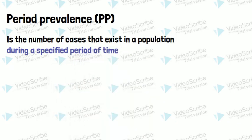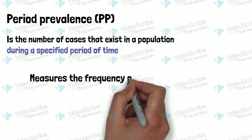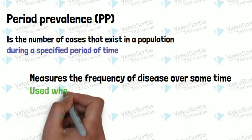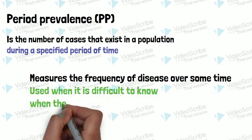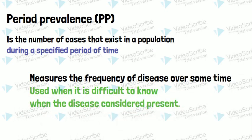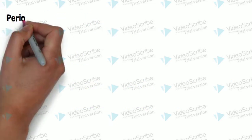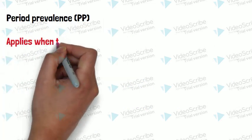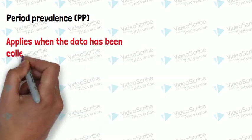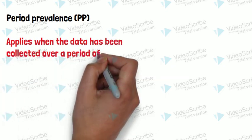Period prevalence is used when it is difficult to know when the disease cases will be present. Period prevalence applies when the data has been collected over a period of time. Period prevalence is not used frequently since it combines both point prevalence and incidence in a single parameter.